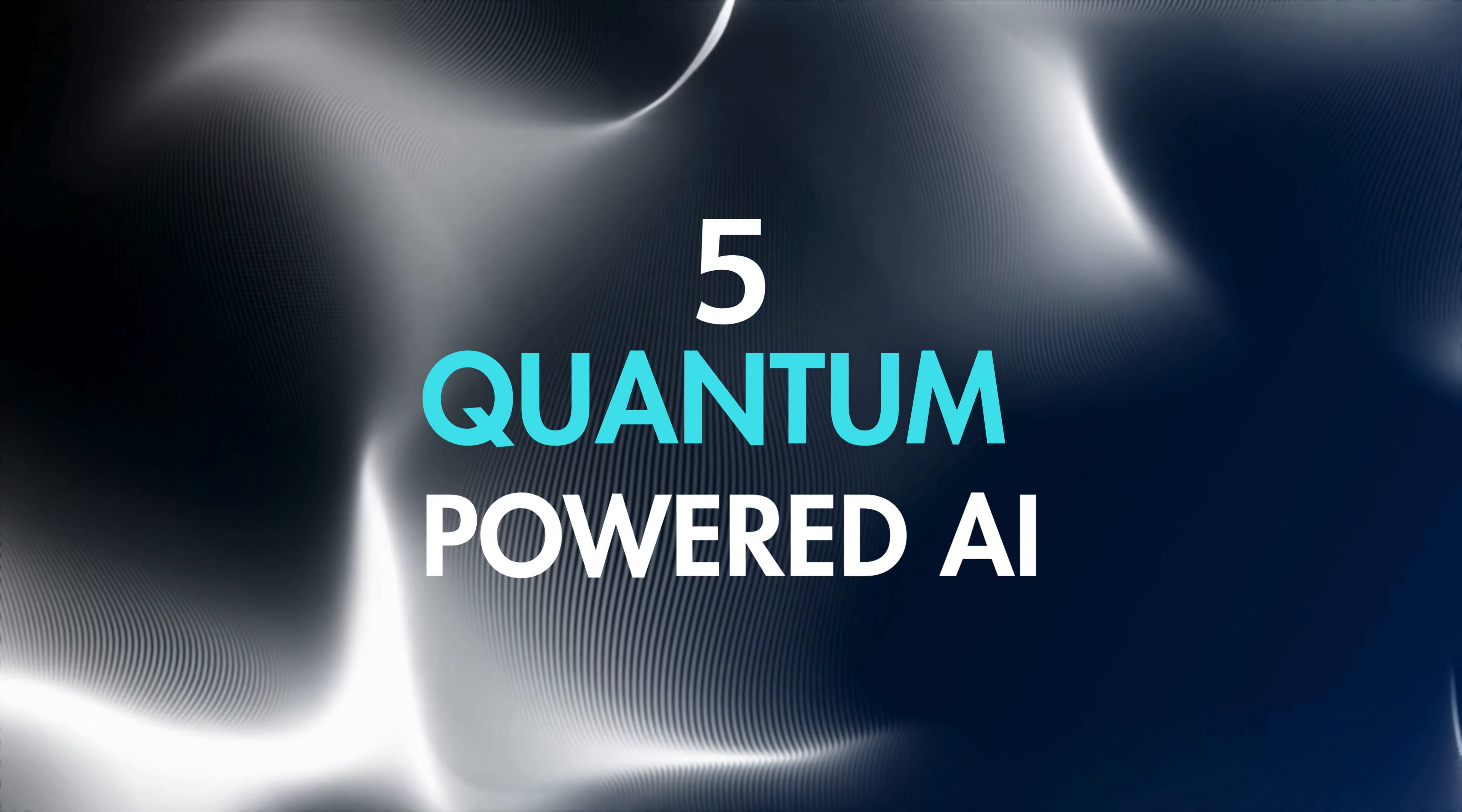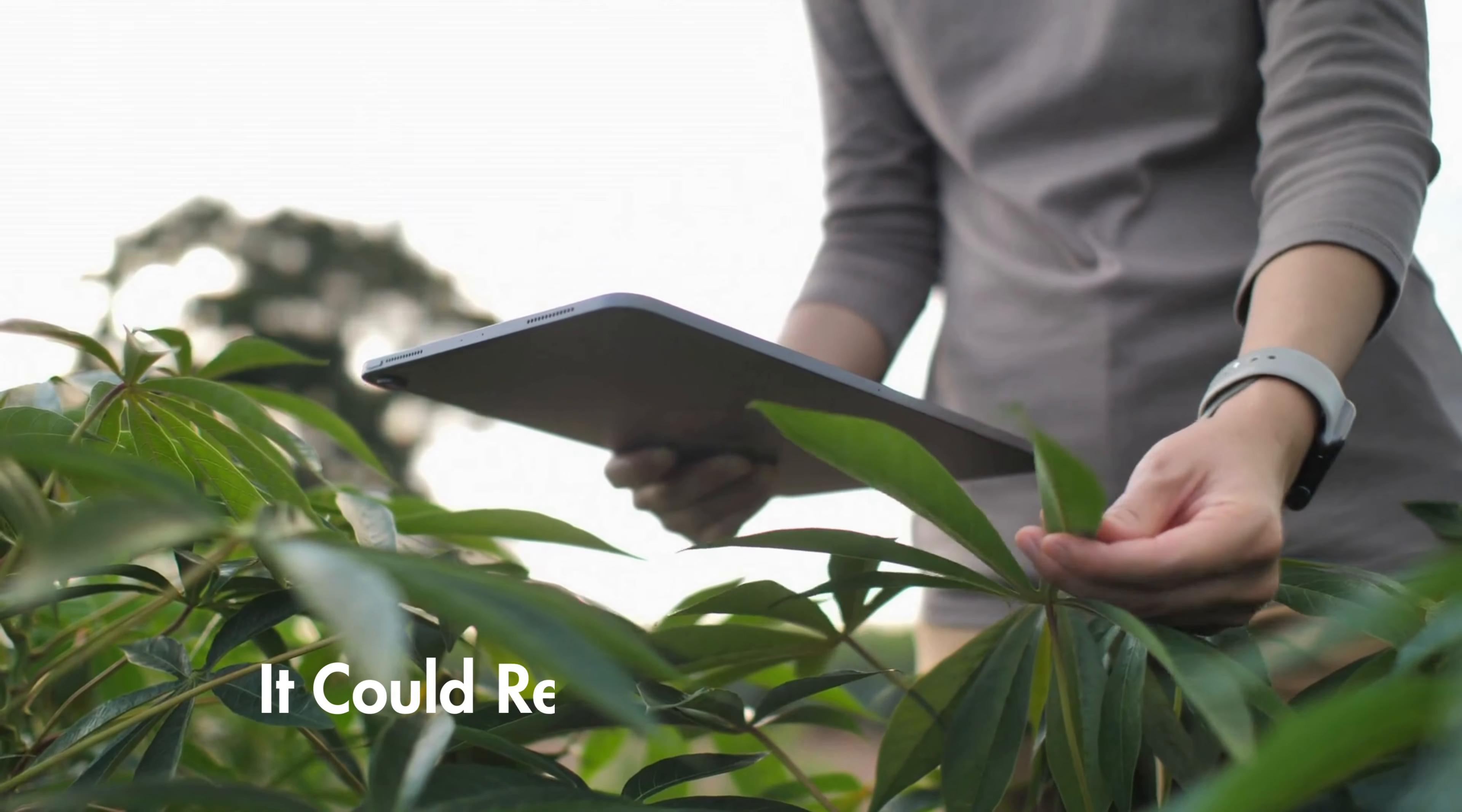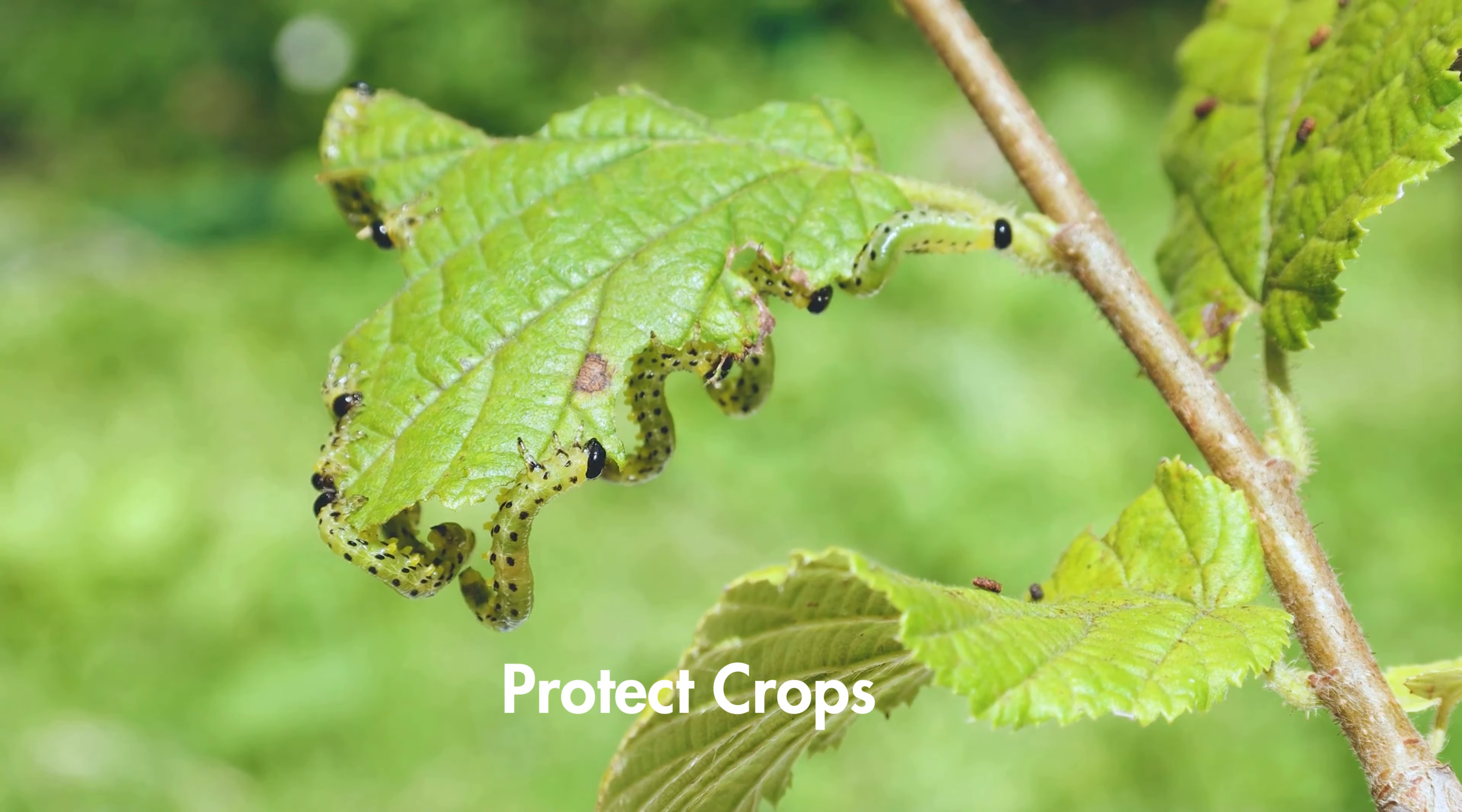Number 5: Quantum-powered AI. AI will be powered by quantum computing. Quantum AI will process vast amounts of data at lightning speed, making leaps of logic and creativity. For example, it could revolutionize agriculture by optimizing crop yields and developing pest-resistant varieties. Imagine AI helping farmers grow more food by predicting the best time to plant and how to protect crops from pests.